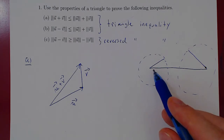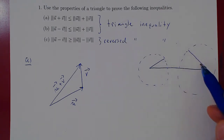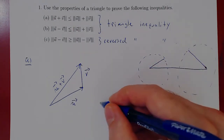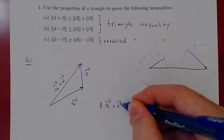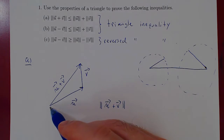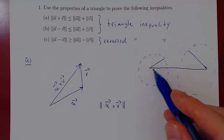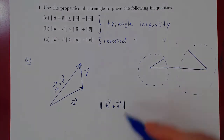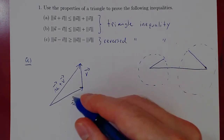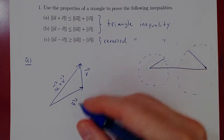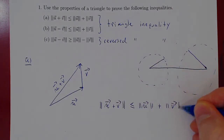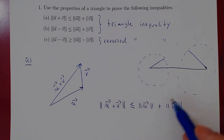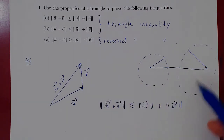Because we have a triangle here, any given edge cannot exceed the length of the other two edges combined. So, the segment u plus v — because we have a triangle — cannot exceed the sum of the two other lengths. If the length of one edge exceeded the sum of the other two, it would be impossible to build a triangle. That is the triangle inequality: the length of any given edge of a triangle can never exceed the total sum of the other two edges.